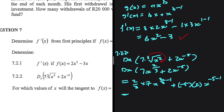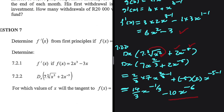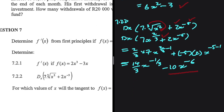Differentiating, we get 2 over 3 multiplied by 7, which is 14 over 3, times x to the power 2 over 3 minus 1, which is minus 1 over 3, and then minus 5 multiplied by 2, which is minus 10, times x to the minus 6. So the derivative is 14 over 3 times x to the minus 1 over 3, minus 10x to the minus 6. Let me verify: 7x to the 2 over 3, multiply by 2 over 3 — yes, all is well.